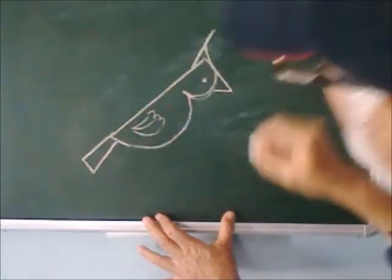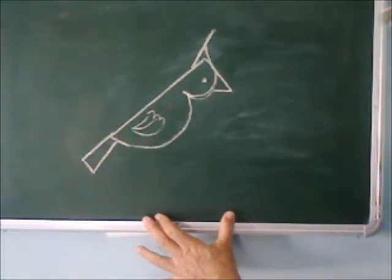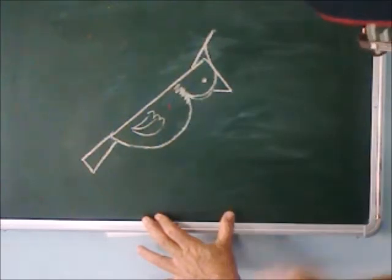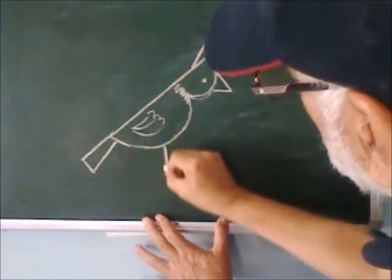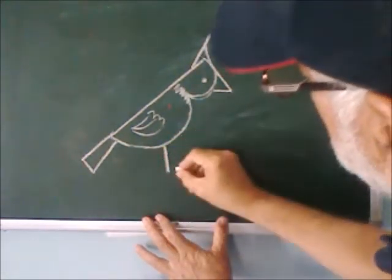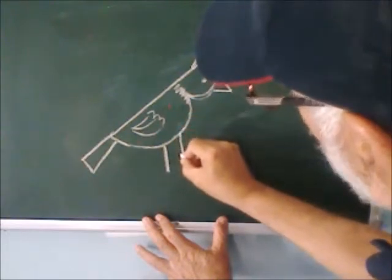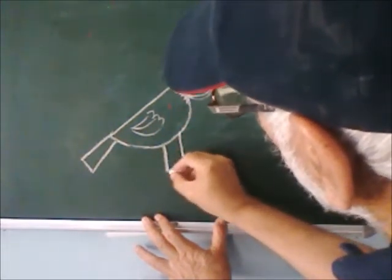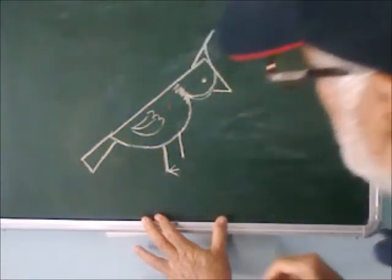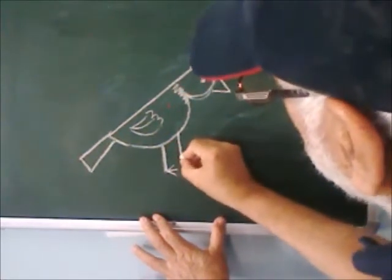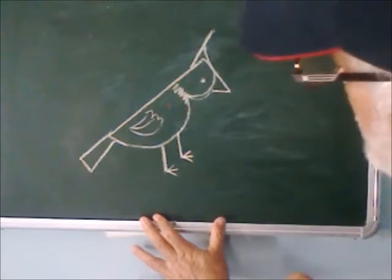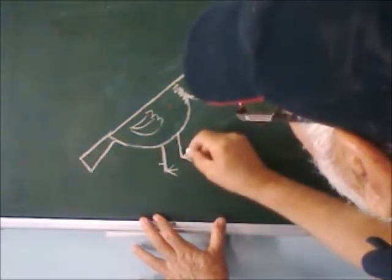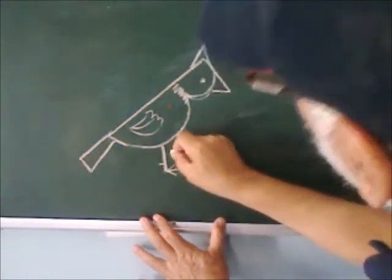Draw a maybe line here. Draw a few curves. Shape this portion. Draw a vertical line. Draw a smaller vertical line here. Draw a pointed line. A pointed line here. A dash here and a dash here.